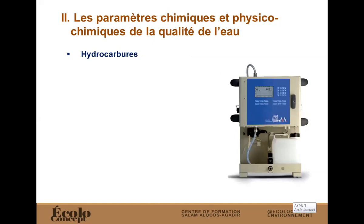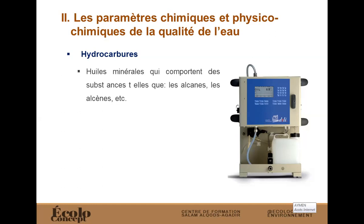Un autre paramètre, ce sont les hydrocarbures. N'oubliez pas que vous n'êtes pas forcément concerné par tous ces paramètres - ça dépend de votre activité. Dans l'exemple de la loi, on a vu que chaque activité a une liste de paramètres à contrôler. La législation se base sur des résultats réels. On connaît déjà la nature des rejets. Si vos rejets ne contiennent pas des hydrocarbures, vous n'êtes pas obligés de suivre ce paramètre. Les huiles minérales comportent des substances telles que les alcanes, les alcènes et ainsi de suite. Ce sont des composés toxiques qui peuvent limiter l'apport en oxygène dans les eaux de surface.